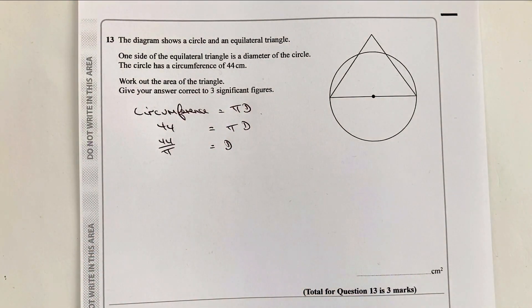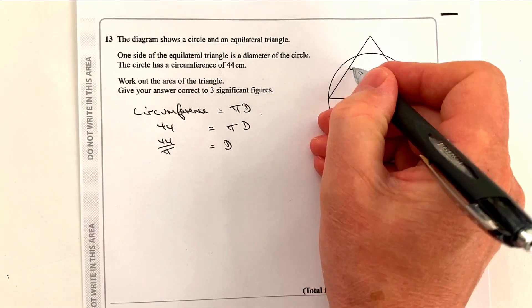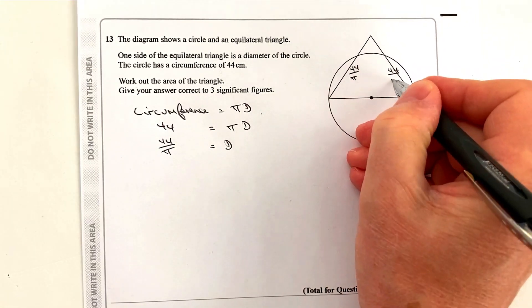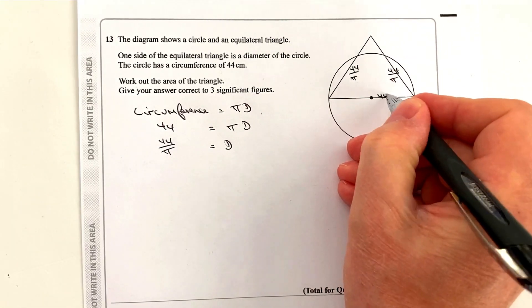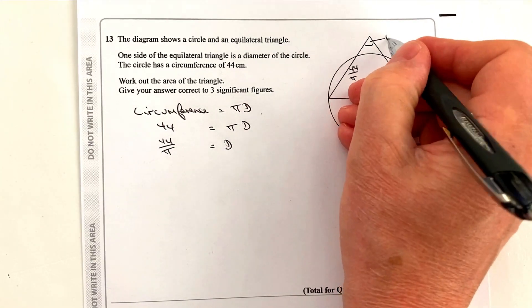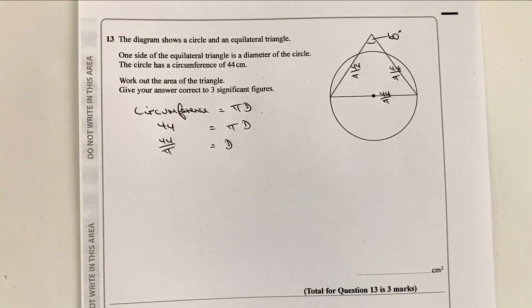We've got 44 as the circumference equals pi times d. So therefore, if I divide both sides through by pi, it means that the diameter of this particular circle is 44 over pi. You could feed that into a calculator if you want to, or you can leave it as a fraction. Basically what we're saying now is we've got an equilateral triangle where each of the lengths of the sides are 44 over pi. The other thing we know about an equilateral triangle is that each of the angles are 60 degrees.